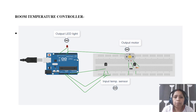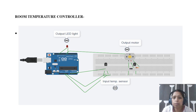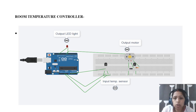Now I will discuss one of the case studies — how you can control the room temperature using Arduino, which can be used for an IoT application: automatic room temperature control.